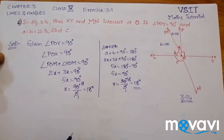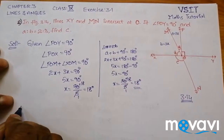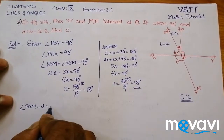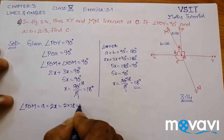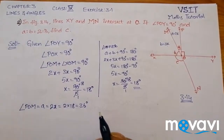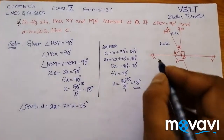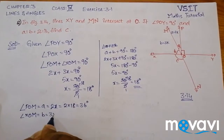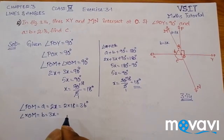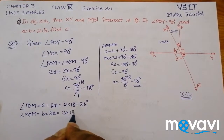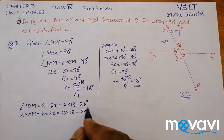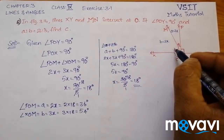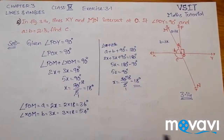Now we have X equals 18 degrees. Angle A equals POM equals 2X, that is 2 into 18, which equals 36 degrees. Angle XOM equals B, which is 3 times X, so 3 into 18 equals 54 degrees. Verification: A plus B equals 36 plus 54, which equals 90 degrees. Correct.